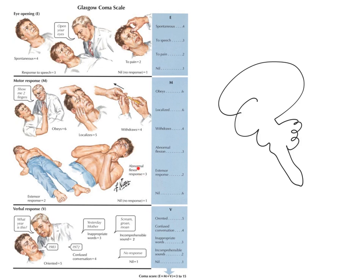A score of three is a flexor response to pain, which is physiological but not a complex withdrawal. This is typical of a decorticate lesion, meaning the lesion is above the level of the red nuclei. An extensor response to pain gives a score of two and is suggestive of a decerebrate lesion — below the level of the red nuclei in the brainstem — which is much worse, as extension is completely unphysiological and unadaptive. A score of one — no response — suggests the damage is so severe that we can't even elicit a spinal reflex.